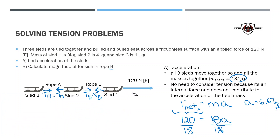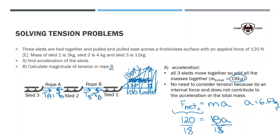One way to make things more complicated is to have the applied force on an angle. If I'm applying a force of 150 newtons at 30 degrees, the sleds are still just going to move in the x-direction. So I need that horizontal component — drawing a right-angled triangle, the horizontal piece is 150 times cosine of 30 degrees. That's the only modification needed if the force is applied on an angle, but in our case it isn't.